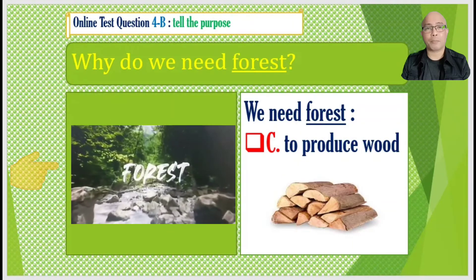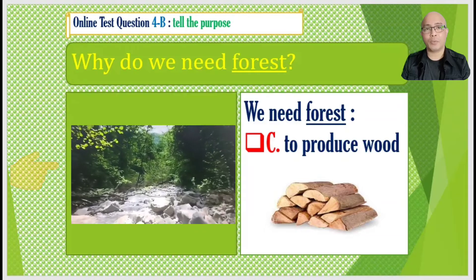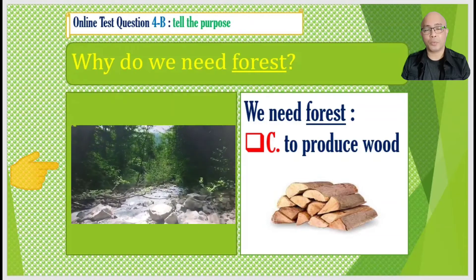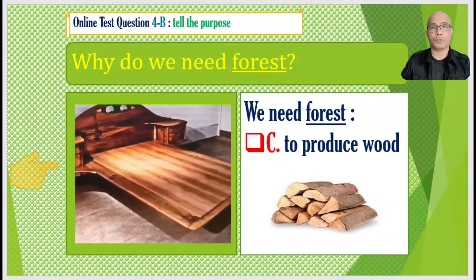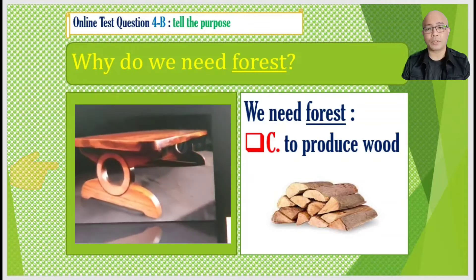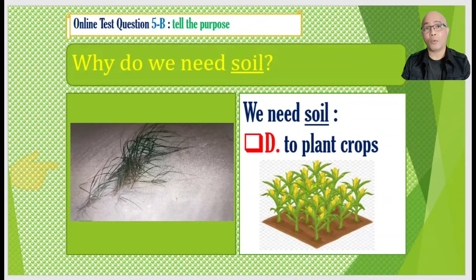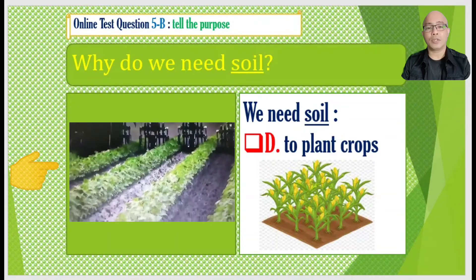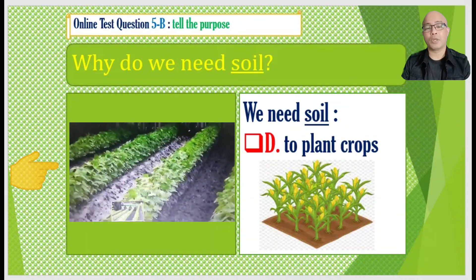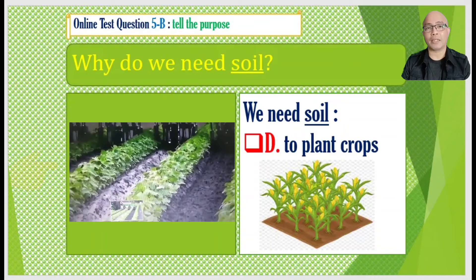Answer number four: Why do we need forest? We need forest — C to produce wood. Answer number five: Why do we need soil? We need soil — D to plant crops.